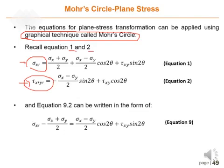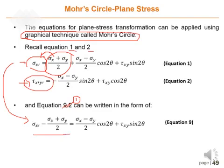Equation 1 can also be written in this form — you bring the term sigma x plus sigma y over 2 to the other side, so it becomes negative. So sigma x-prime minus (sigma x plus sigma y)/2 equals (sigma x minus sigma y)/2 times cosine 2-theta plus tau xy times sine 2-theta. This is equation number 9.